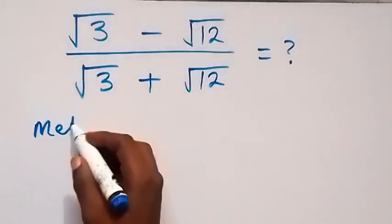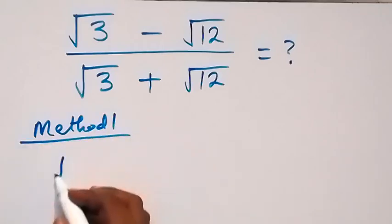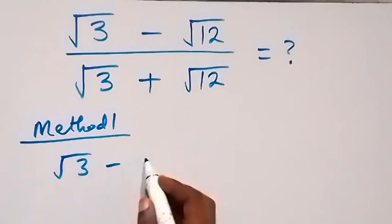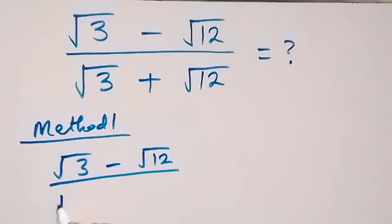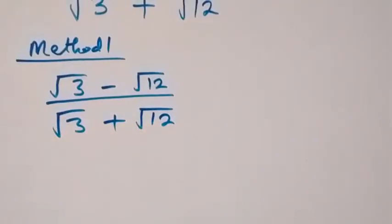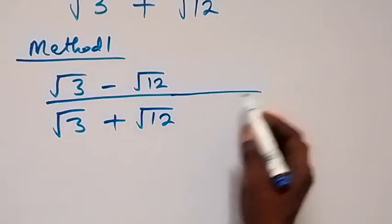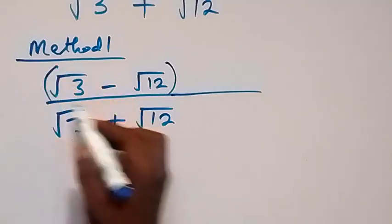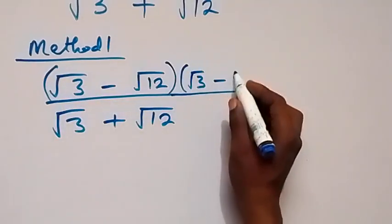The first method, we have root 3 minus root 12, then divided by root 3 plus root 12. Now here, when we multiply by the conjugate, we rationalize. The conjugate of this is root 3 minus root 12.